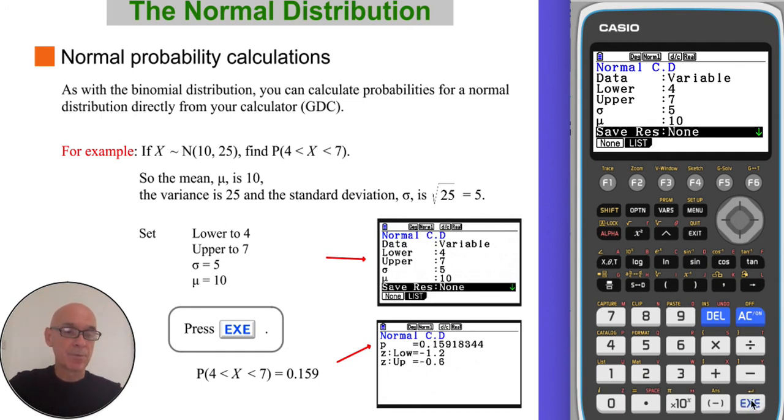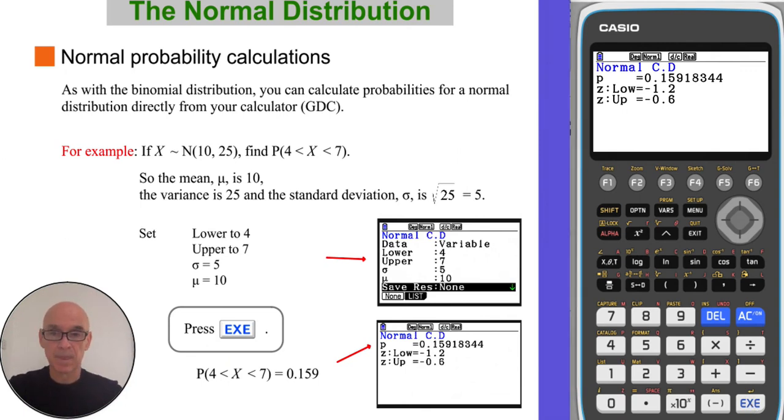And then if we press execute, we will see the required probability. So the probability that x lies between 4 and 7 is equal to 0.159.